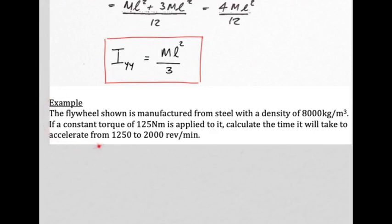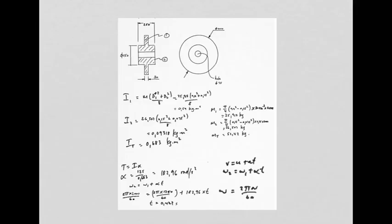Here's another example — stop the video and attempt it yourself, then restart to check the solution. The approach is exactly as before: work out the mass of each piece, get the total mass, work out I of each piece, add them up, then use T = Iα to find the angular acceleration, and finally use the equations of motion to find the time for that acceleration to occur.